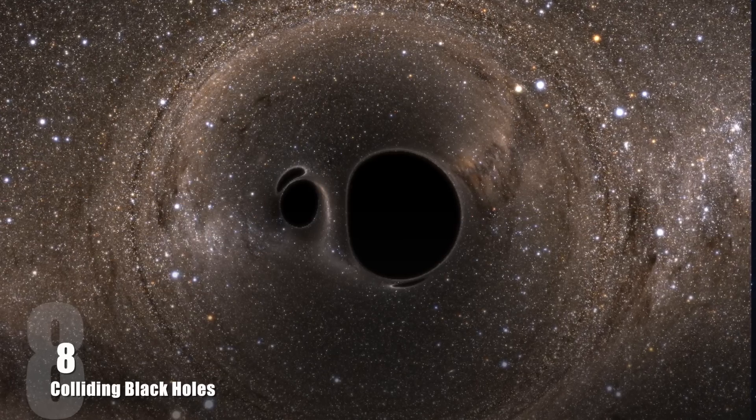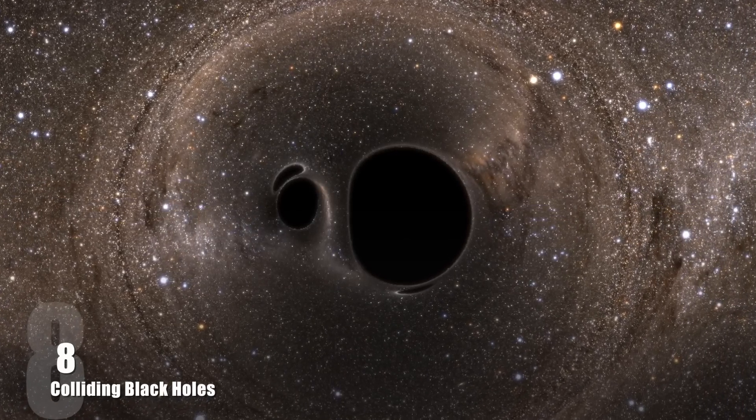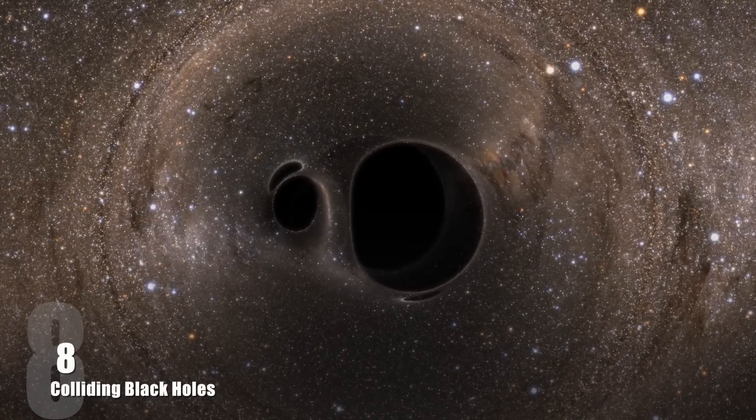The black holes were about 29 and 36 times the mass of our sun. Before colliding, they circled each other and then, in a fifth of a second, they became one black hole with the mass of 62 of our suns.